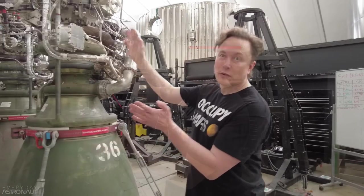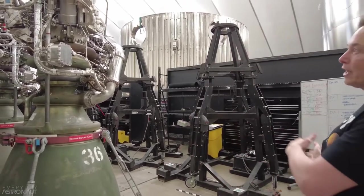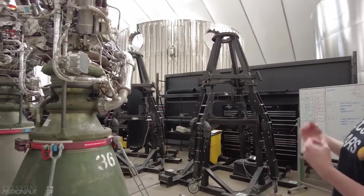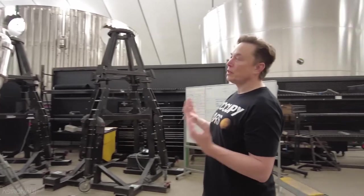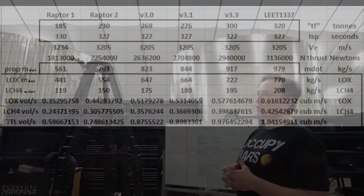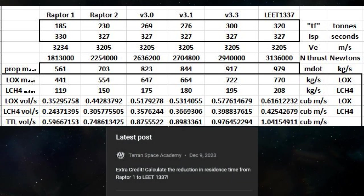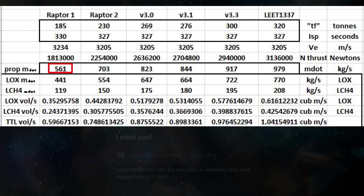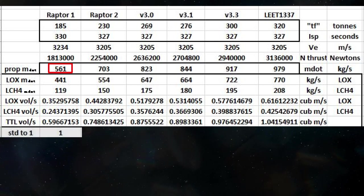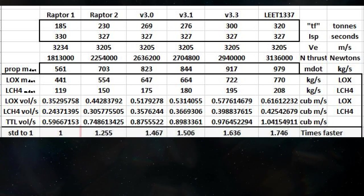We couldn't find a sufficiently stripped-down engine to use as a reference anyway. Plus, what's the volume of Elon's head — who knows? But I asked about the reduction in residence time, not the actual residence time itself. By setting the mass propellant flow to a standard of 1 in the Raptor 1, and then using it as a metric to compare the other engines, we get our results.